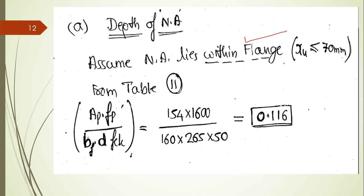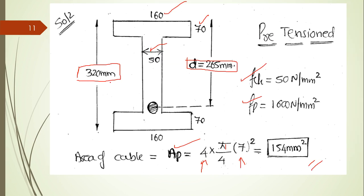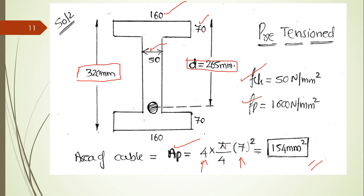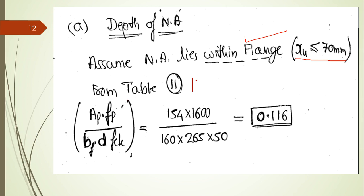Assume the neutral axis lies within the flange, i.e., x_u < 70 mm. From Table 11 of IS 1343:2012, find the reinforcement ratio A_p · f_p / (b_f · d · f_ck). Substituting: A_p = 154, f_p = 1600, b_f = 160, d = 265, f_ck = 50, the ratio = 0.116. Now find x_u/d and f_pu from Table 11.